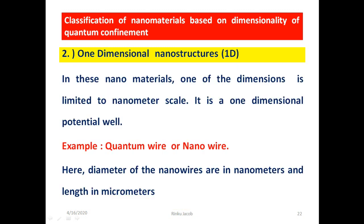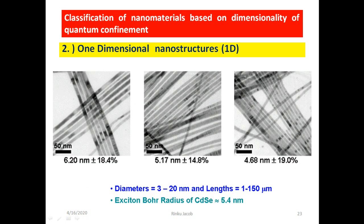The next structure is the 1-dimensional nanostructure. In these nanomaterials, one dimension is limited to nanometer scale and the other two dimensions are free — it is a 1-dimensional potential well. An example is a quantum wire or nanowire, with diameter in nanometers and length in micrometers. The figure shows nanowires with diameters in the range of 3 to 20 nanometers and lengths from 1 to 150 micrometers.